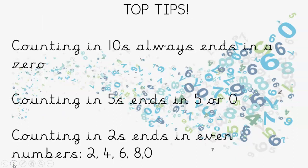So, our top tips. When you've been counting in tens, it always ends in a zero. If you're counting in fives, it ends in a five or a zero. If you're counting in twos, it always ends in an even number — two, four, six, eight, and zero.